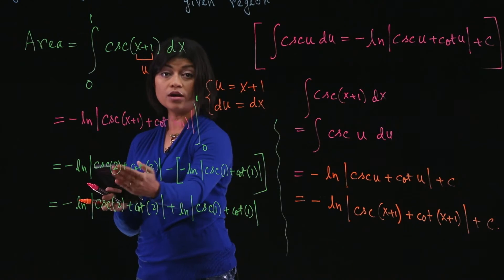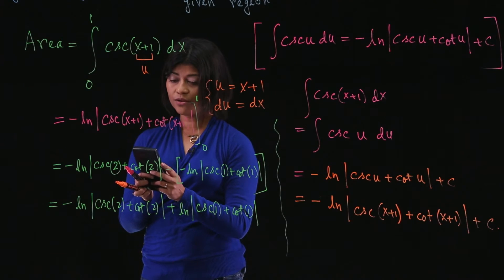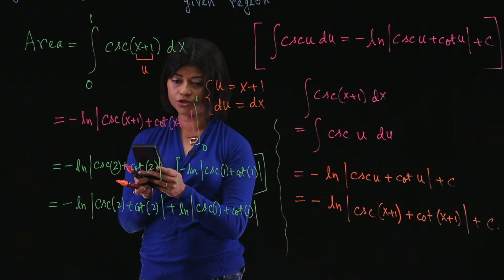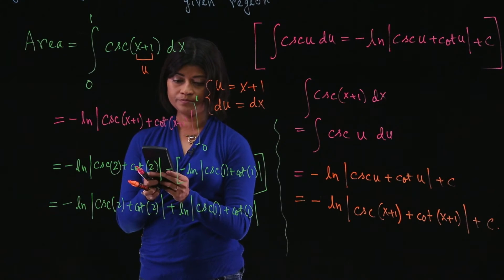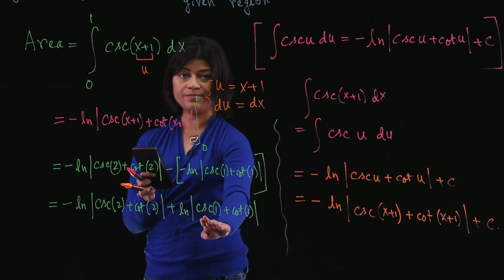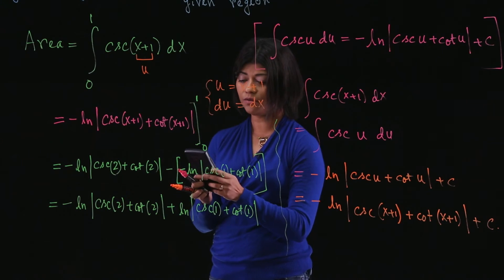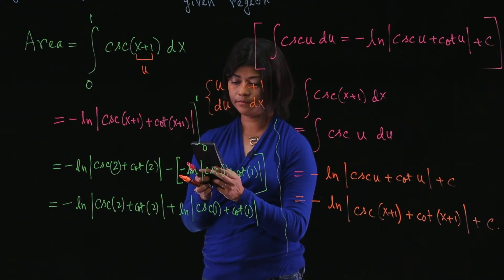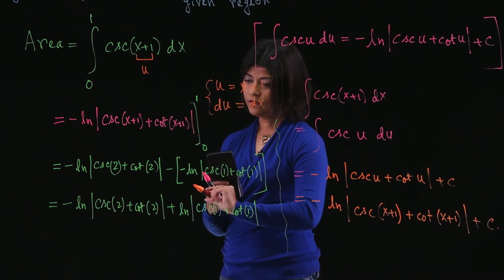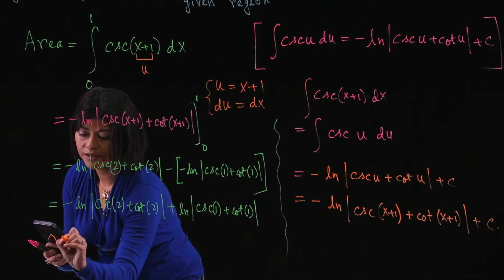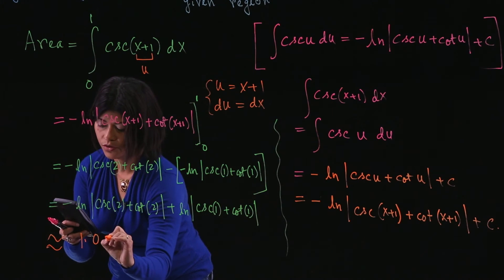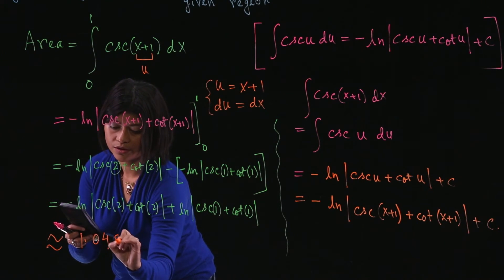Remember, cosecant is 1 over sine. So you can use that, 1 over sine of 2. And cotangent is 1 over tangent. So 1 over tangent of 2 plus natural log of, same thing here, 1 over sine of 1 plus 1 over tangent of 1. And approximately, the area is 1.048.